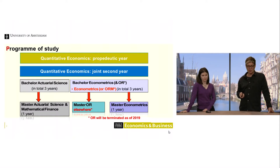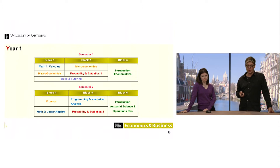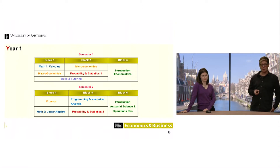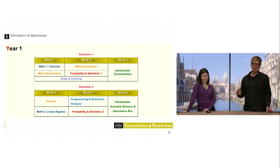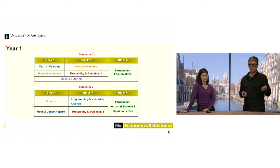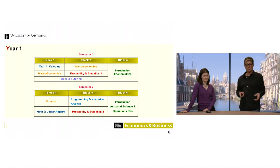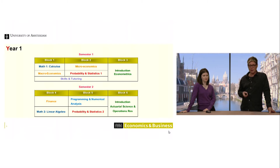The structure is called 8-8-4: two semesters with two blocks of eight weeks and one block of four weeks. We have a mixed program — a technical course alongside an economics course. In the first block you start with Mathematics — I'm a math professor, so you'll see me there. We start with Calculus, the basic techniques you'll definitely need. In parallel you follow Macroeconomics. In the second period we have Microeconomics and Probability and Statistics.